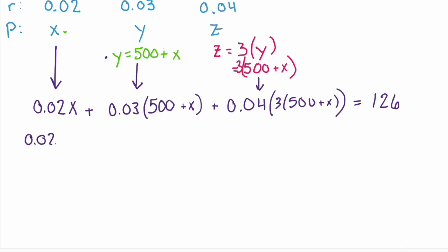The first term stays as 0.02x. The second, we have 0.03 times 500, which is 15, and then multiply 0.03 times the x. Here we're going to distribute through this first parentheses first, so the inner part becomes 1500 + 3x. Now if we multiply 0.04 times 1500, that would be 60. And 0.04 times 3x is 0.12x. And that has to equal 126.